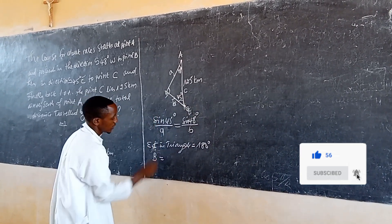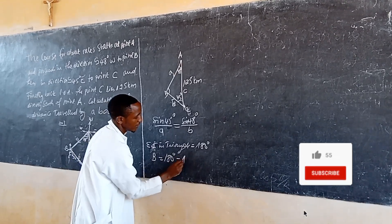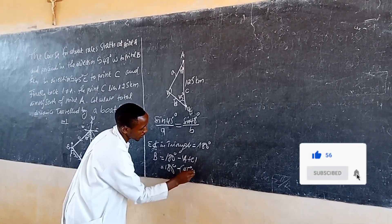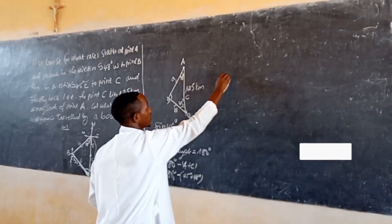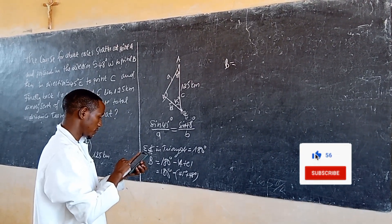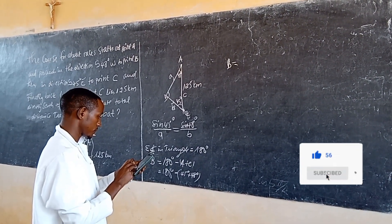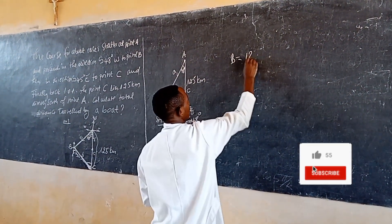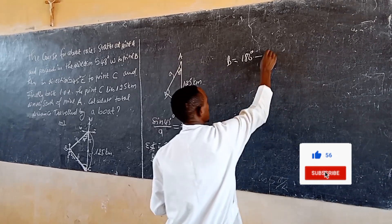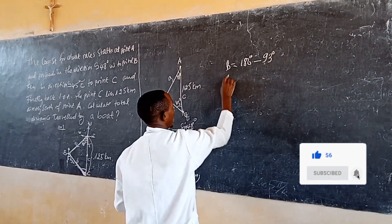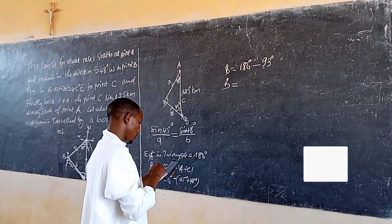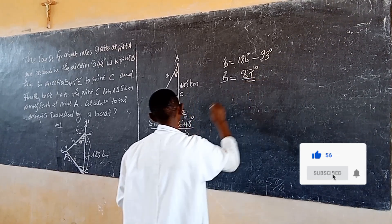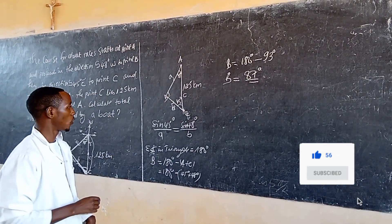So angle B equals 180° minus (A plus C), which equals 180° minus (45° plus 48°). So angle B equals 180° minus 93°, which gives angle B equal to 87°.